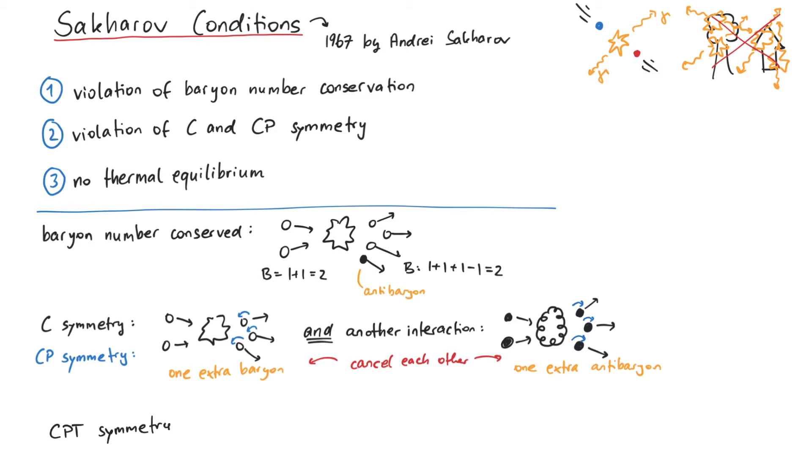Third, by CP invariance, any interaction that changes matter to antimatter is balanced out by thermal fluctuations via some other interaction that changes antimatter to matter. To get away from this balance, we need to move away from thermal equilibrium.